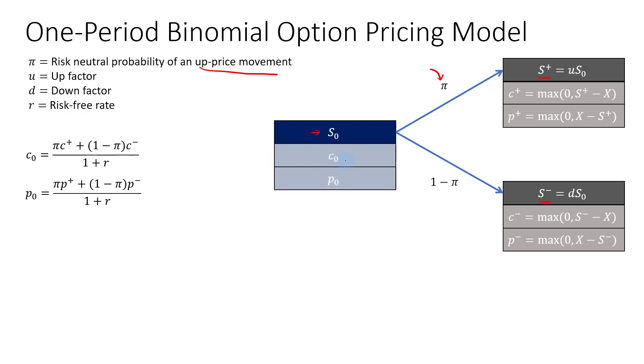Now, how do we derive the risk-neutral probability? Right, so the formula for pi equals 1 plus the risk-free rate minus the down factor, over the up factor minus the down factor. So to derive this...